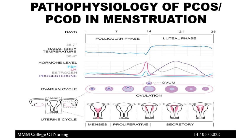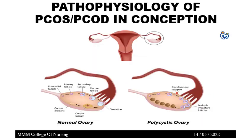This covers the pathophysiology of PCOS and PCOD in normal menstruation. In cases of PCOD and PCOS, normal menstruation is affected — hormonal levels do not rise to the appropriate levels, ovulation does not occur, and the endometrial lining is also affected.